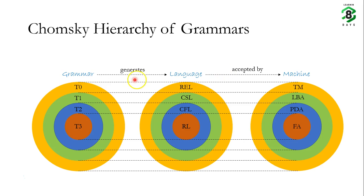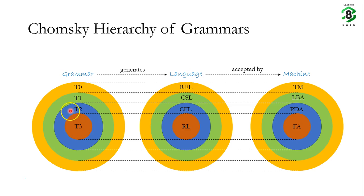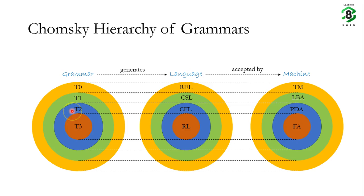We should notice that the grammars are organized in a subset form. Type 0 grammar is the superset of all the other grammars. Type 1 grammar is a subset of T0, T2 is a subset of T1, and T3 is a subset of T2. The production rules of a T0 grammar are very generic, whereas the production rules of T1 are more restricted than T0, T2 more restricted than T1, and T3 has the most restricted kind of production rules.